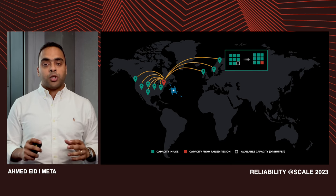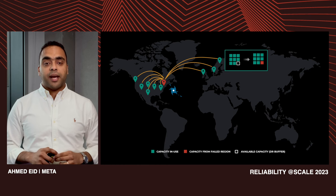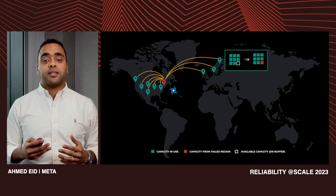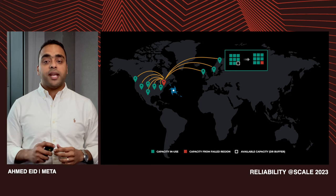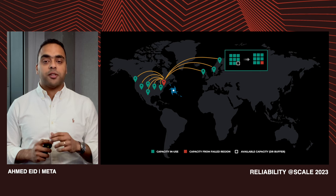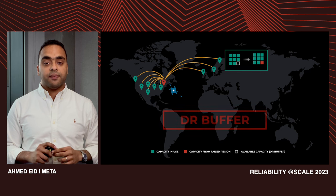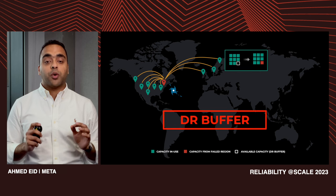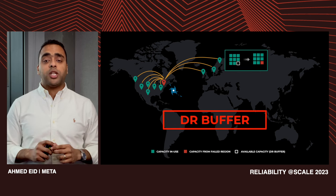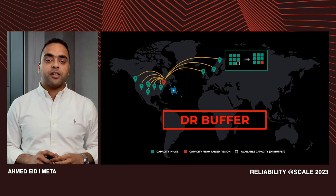To make our infrastructure resilient to single-region failures and ensure no user impact during such an instance, we decided to add extra capacity — a DR buffer — which gives healthy regions enough resources to absorb traffic from the faulty region without any overload risk. We call this the DR buffer, and we work closely with the capacity planning team to make sure services have the minimal capacity needed to survive single-region failures.